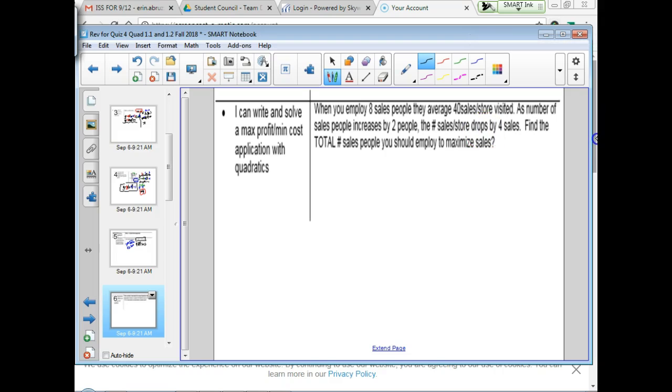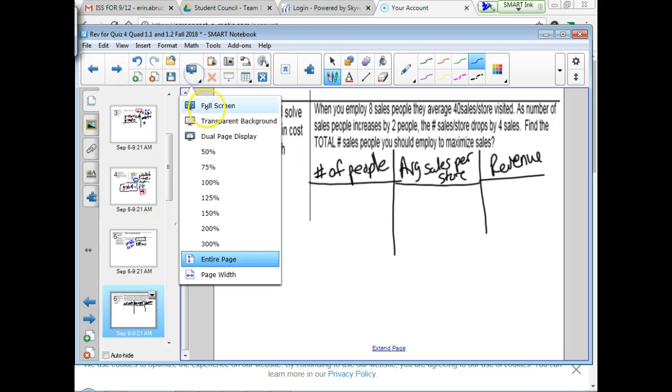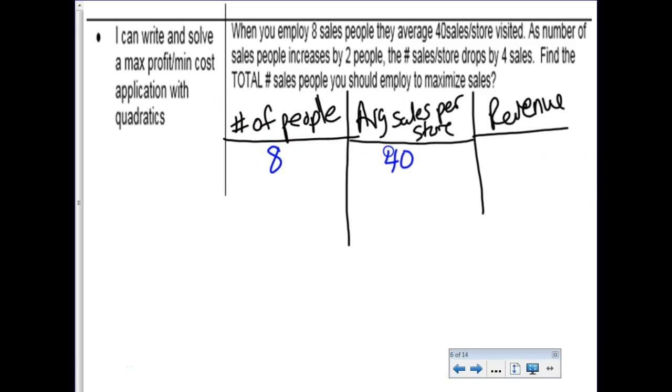I love these questions with the little charts. So you employ eight salespeople who average 40 sales per store visited. As you increase your number of people by two, the number of sales drops by four. So find the total number of sales that will help you maximize sales. So how about we make a little chart? So we have the number of people that are selling for us. And then the average sales per store. And then the last column is technically revenue, but something that my kids picked up on real quick was you really don't need to fill out that column because that's going to be the algebra stuff that your calculator is going to handle. So eight salespeople is what they start with. Eight people and it's 40 sales per store.